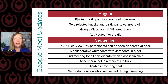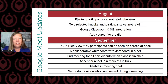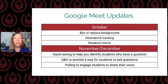Now in September we have some new updates coming. We have a 7x7 tiled view where 49 participants can be seen on screen at once — I have that one, though some of my team members don't. We also have the option to disable the in-meeting chat and to set restrictions on who can present during the meet, so all of these things are coming to you right now.